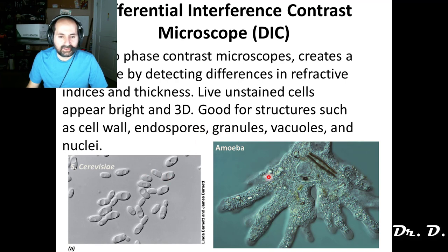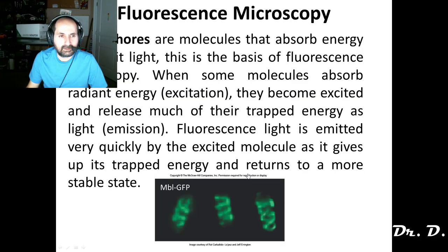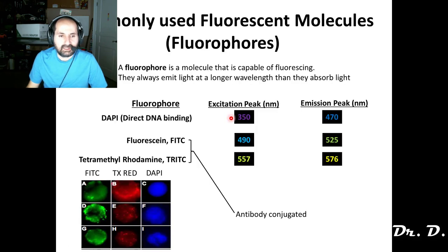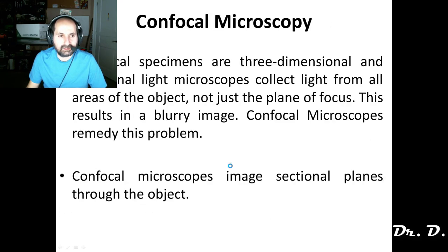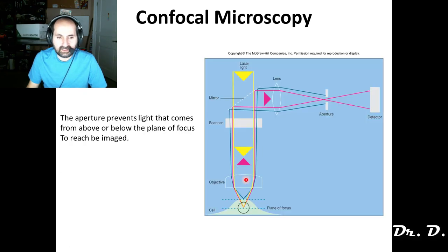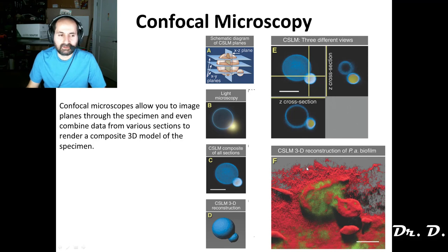DIC microscopes produce an image that appears 3D because of the polarity of light — a different polarity of light reaches one eye than the other. Fluorescence microscopy requires fluorophores, which are molecules that absorb energy and then emit light. The excitation wavelength is always shorter and the emission wavelength is longer — never the other way around. Confocal microscopy uses a computer to look at multiple planes through a specimen and render a three-dimensional fluorescent image.